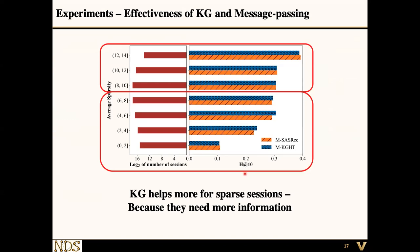We also conduct sensitivity analysis on performance across sessions with different item sparsity. If items are less frequently involved in many sequences, those sessions have higher sparsity or lower density. Our framework, KGHT (knowledge graph session recommendation), outperforms existing frameworks, especially on sessions involving sparse items, because those items require additional knowledge and using KGHT provides the most benefit.